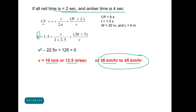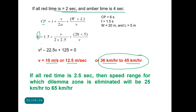Now, if in the same example we provide all-red time of 2.5 seconds instead of 2 seconds, solving the equation again for CP = 6.5 seconds, we find the dilemma zone can be eliminated for a speed range of 25 to 65 km/h. This indicates the importance of all-red time and how sensitive the dilemma zone is to the change period — the effective speed range has increased significantly from 36–45 km/h to 25–65 km/h.